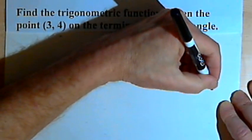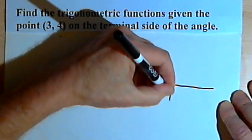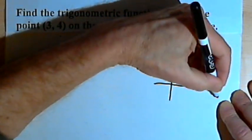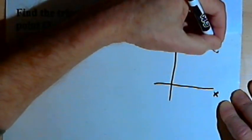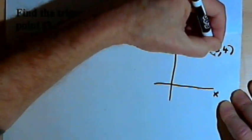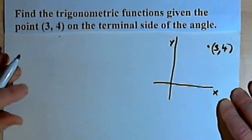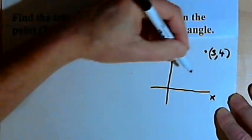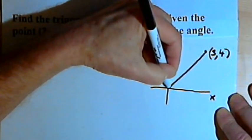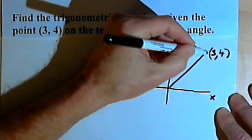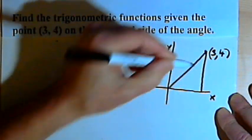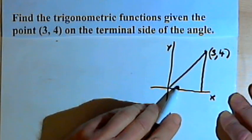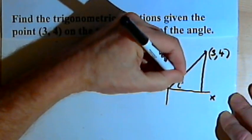To understand the concept, I'm going to draw a simple graph of an x-axis and a y-axis, and I'll put a point onto that graph that we'll call (3, 4). Using that point, I can create a right triangle. I'm going to connect that point with a straight line down to the origin, and also connect the point with a vertical line down to the x-axis. So this angle that I've created at the origin is an angle we can call theta.